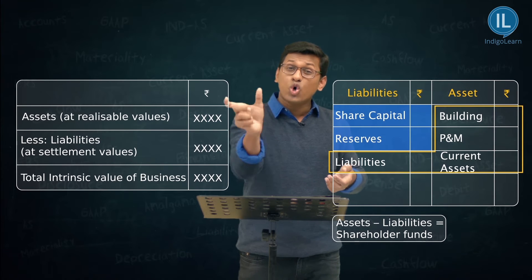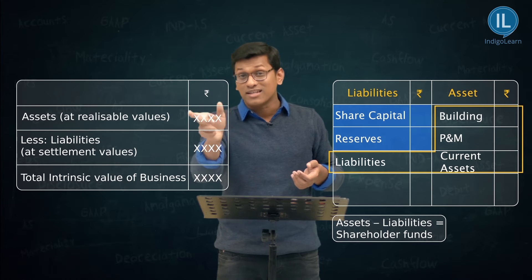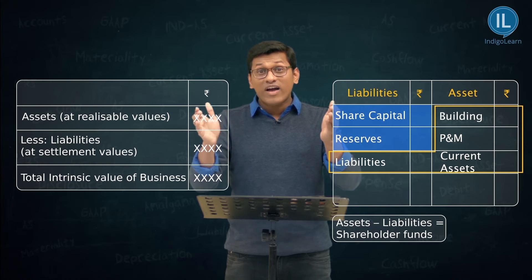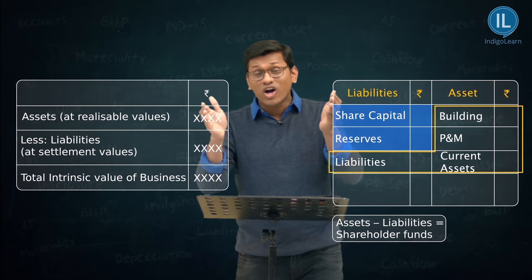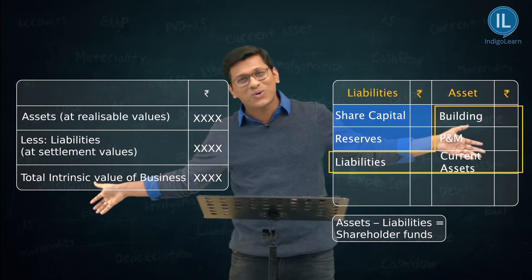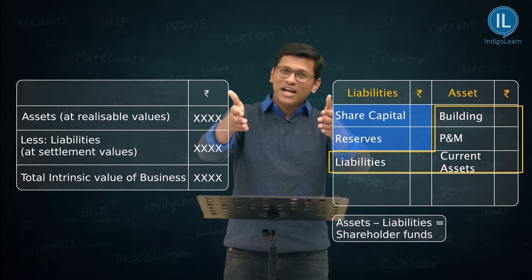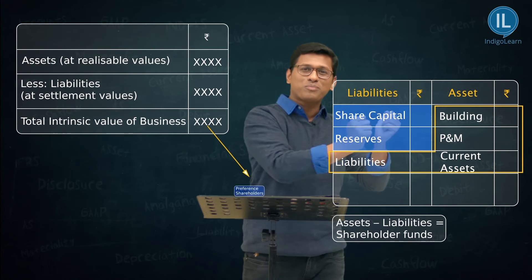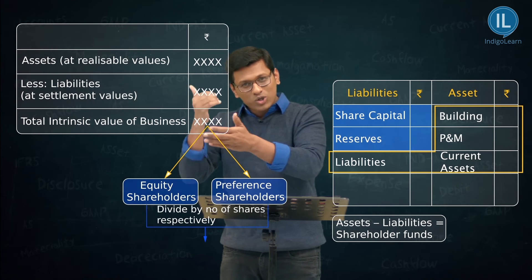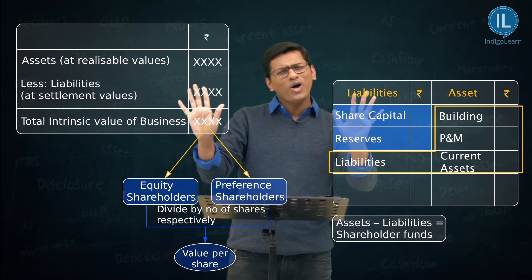That will be the total intrinsic value of the business. Chartered accountants, note — this is the intrinsic value of the whole business, not just one share. That total is attributable to all shareholders. From that, you allocate what is for preference shareholders and what is for equity shareholders. Divide the equity portion by the total number of equity shares and you will get value per share.